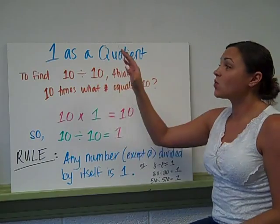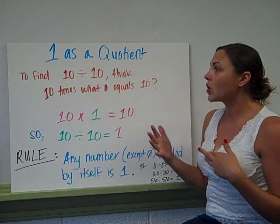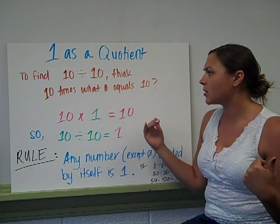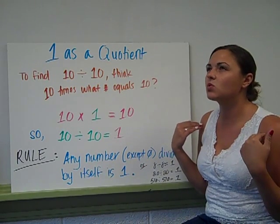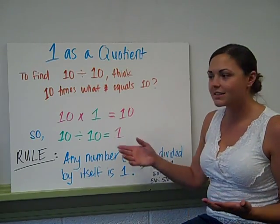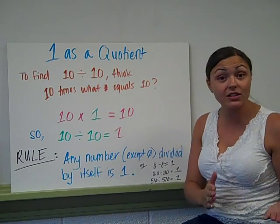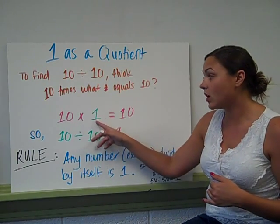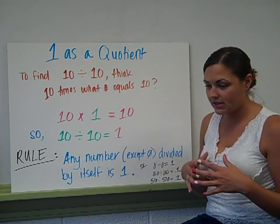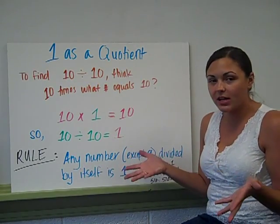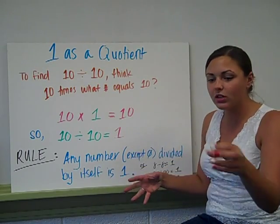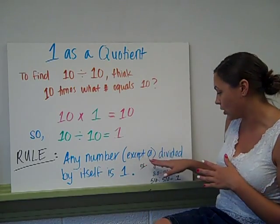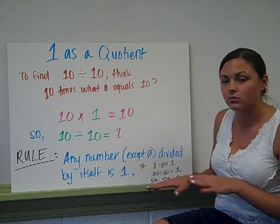The next rule is 1 as a quotient. Instead of dividing by 1, we're getting 1 as an answer. So if I have the problem 10 divided by 10, to find the answer, think to yourself: 10 times what number equals 10? 10 times 1 equals 10. Because back in multiplication, the identity property of multiplication states that any number times 1 is that number. So 10 times 1 gives me 10. Therefore, if I have 10 candies and I divide them into 10 equal groups, there's only going to be 1 in each group. The rule for 1 as a quotient is any number, except 0, divided by itself is 1, no matter what the number is.